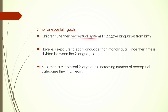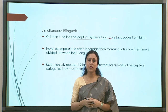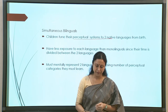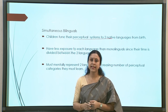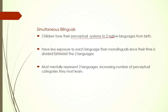Simultaneous bilinguals tune their perceptual system to two native languages from birth. We will not call them L1 and L2 because both languages are being learned at the same time — we can call them both native languages. If a child is a simultaneous bilingual, they will attune their perceptual system to both those languages. As a result, they have less exposure to each language than monolinguals — the same amount of time is divided between two languages.